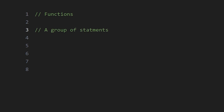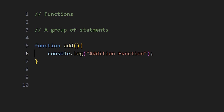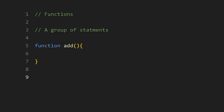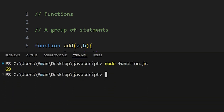Next, we have functions. In simple words, a function is a group of statements. To declare a function in JavaScript, we use the 'function' keyword, then the function name, then parentheses, then the code in curly braces. To call a function, we write the function name with parentheses. We can call it as many times as we want, making our code reusable. We can also pass parameters — for example, variables a and b — and print their addition, passing values like 60 and 9 when calling the function.